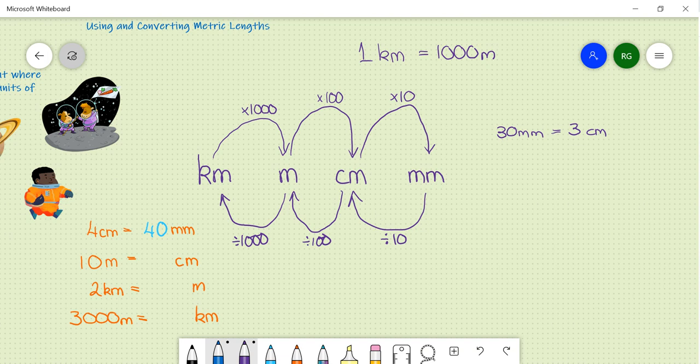If we were to go from ten metres, and we want to convert to centimetres, we need to multiply by one hundred. So, ten multiplied by one hundred is one thousand centimetres.